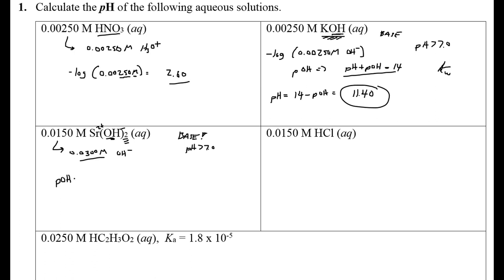Since we have the hydroxide concentration, we'll calculate pOH. Then 14 minus the pOH is going to give you the pH. In this case, I think my calculator spits out something like 12.48. Definitely above seven, so there you go — you're good there.